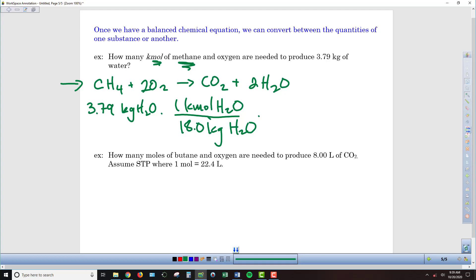If we want to figure out how much methane we need, we can go ahead and multiply that times the conversion of the mole ratio of methane and the water from our balanced equation. So I'm going to multiply that times 1 kilomole of the methane for every 2 kilomoles of the water.